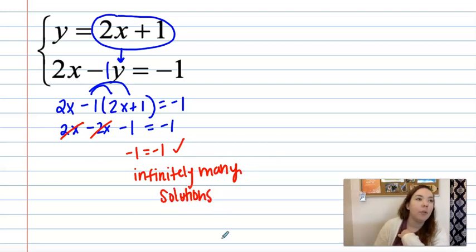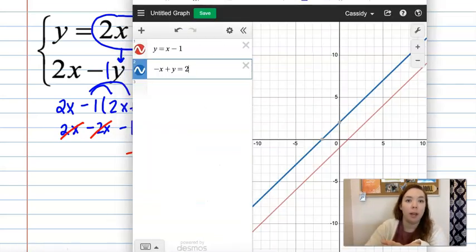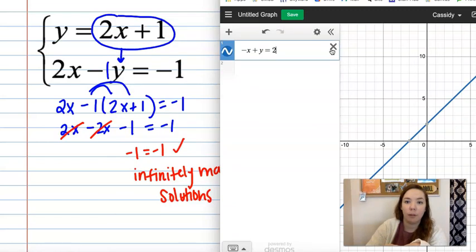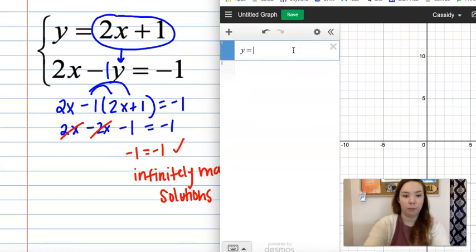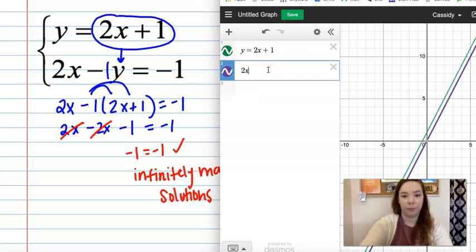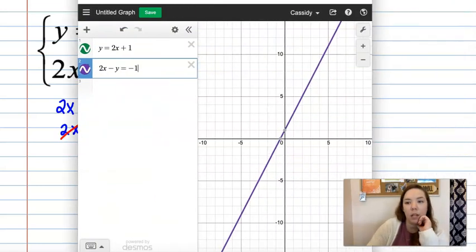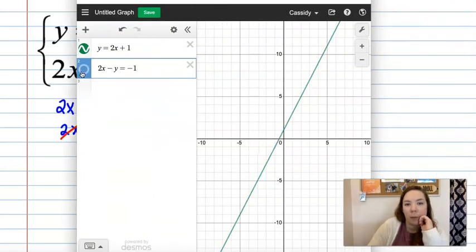Okay. So you are also again you could graph it. Let's go ahead and put that in here. Okay. And then you can see. Like if I turn my purple line off and back on. They're the exact same line. So that's why they're infinitely many solutions.